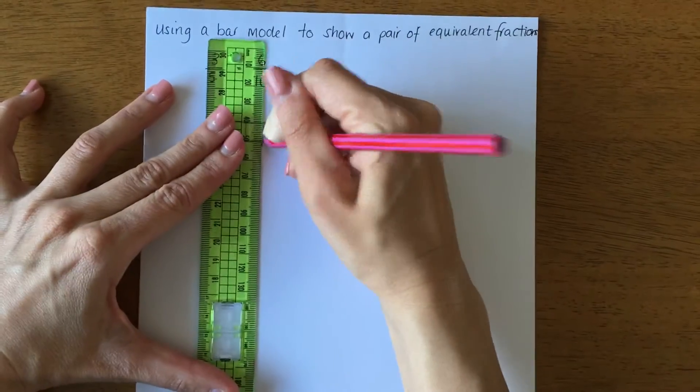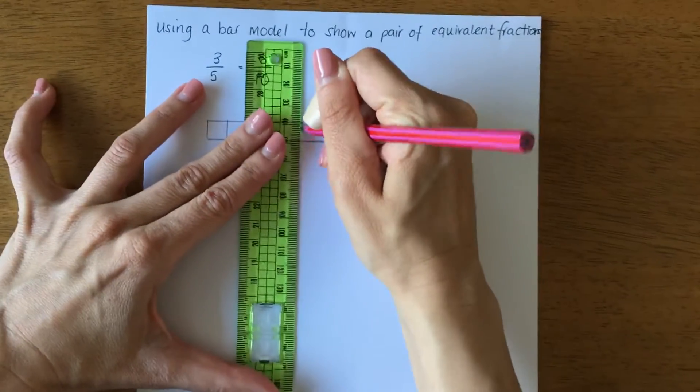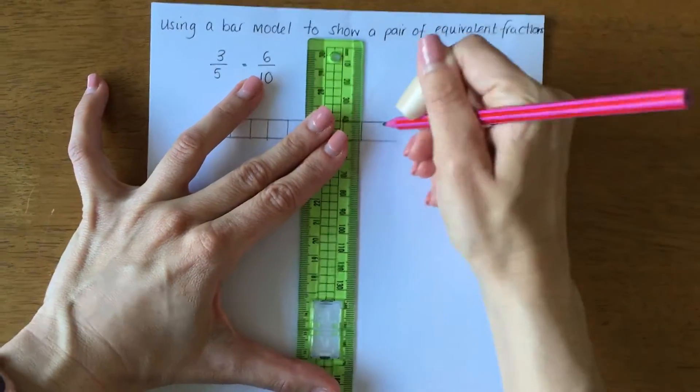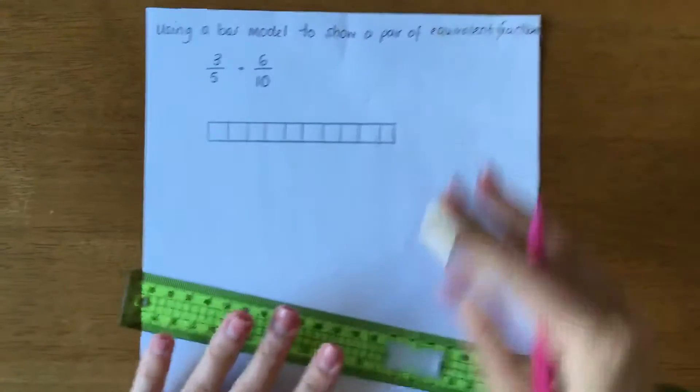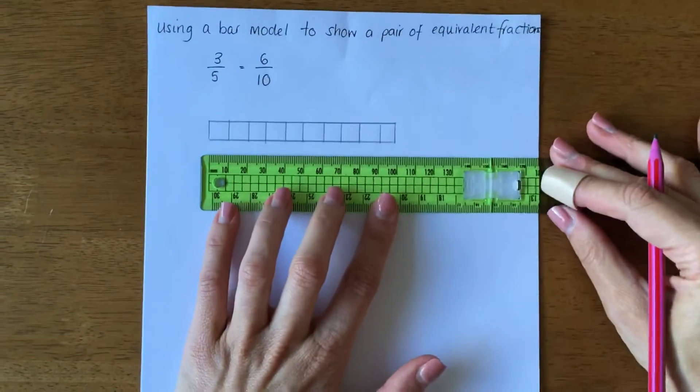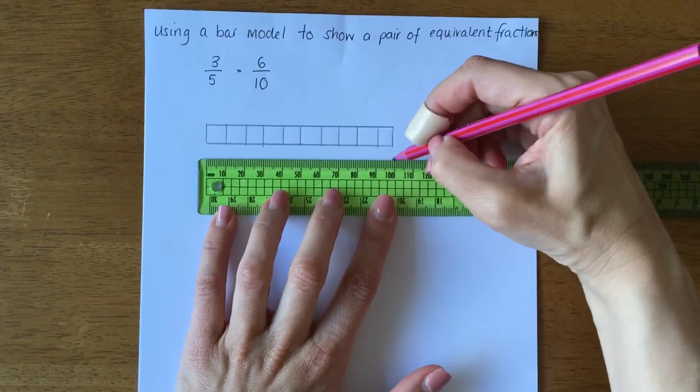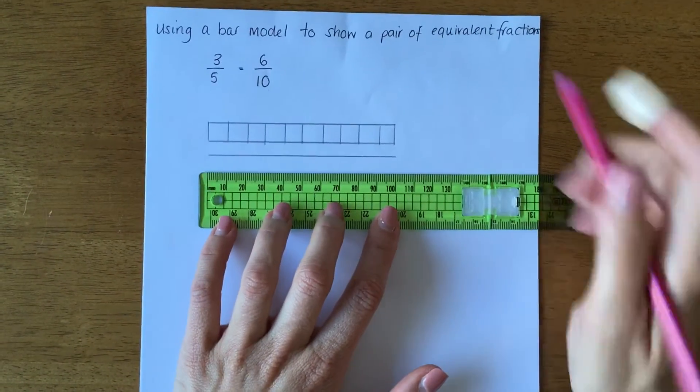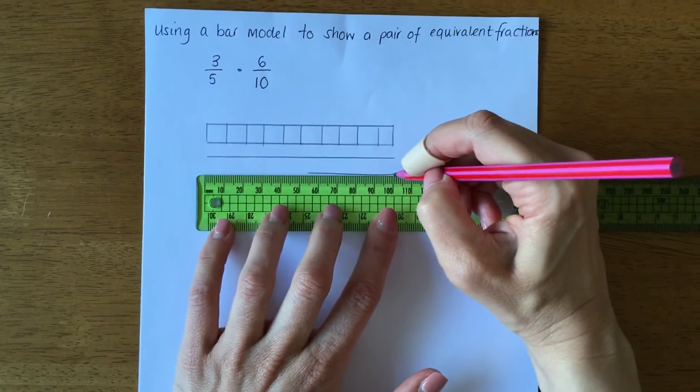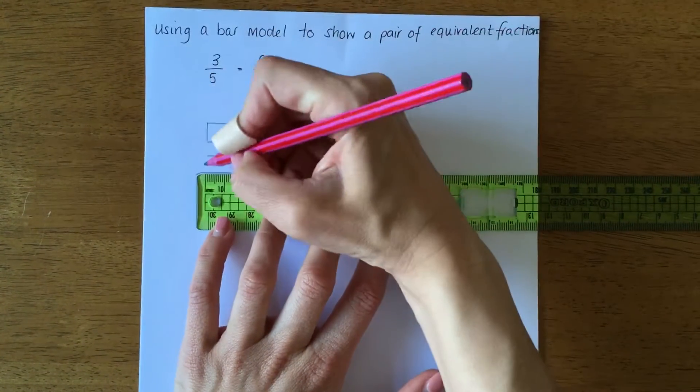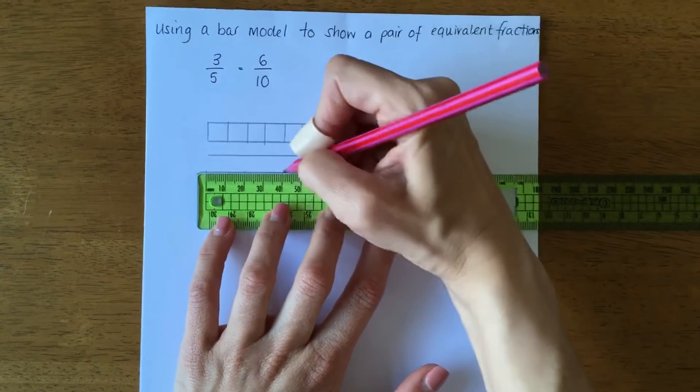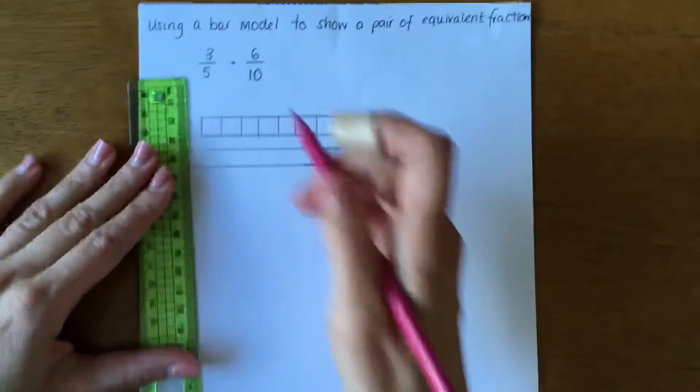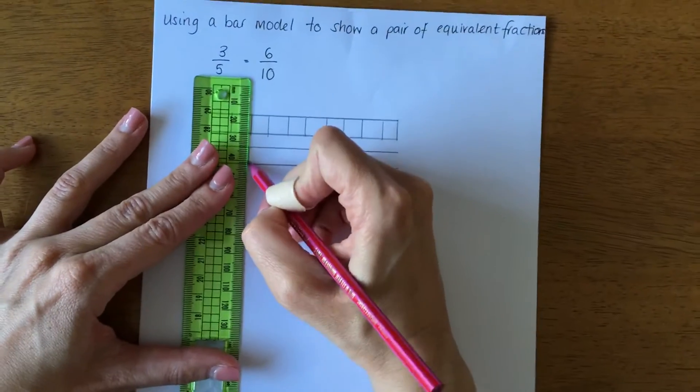We're going to do the same now for fifths. I need to make sure my bar is the same length, so it has to go up to 10. However, this time I only want it split into fifths, so I'm going to mark it every two centimeters.